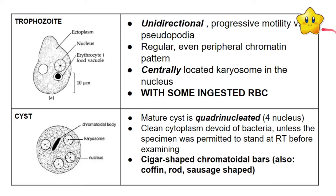For the cyst form of Entamoeba histolytica, the mature cyst is quadrinucleated — it has four nuclei. It has a clean cytoplasm devoid of bacteria unless the specimen was permitted to stand at room temperature before examination. It is also characterized by cigar-shaped chromatoid bars — also described as coffin rod-shaped or sausage-shaped — which is a key morphological characteristic.